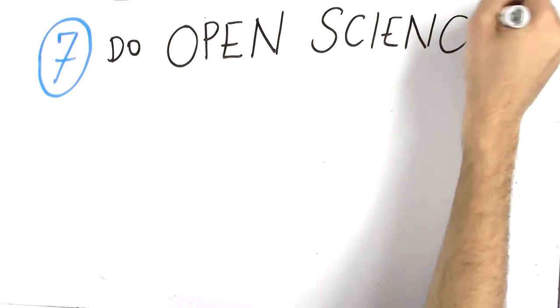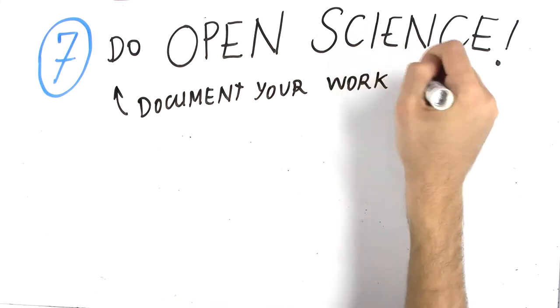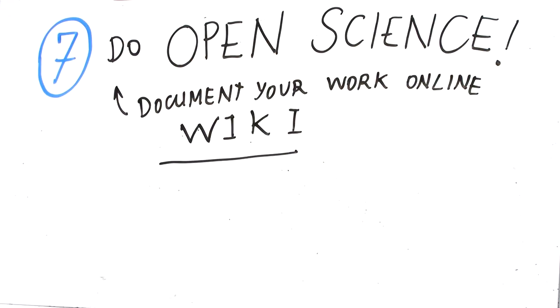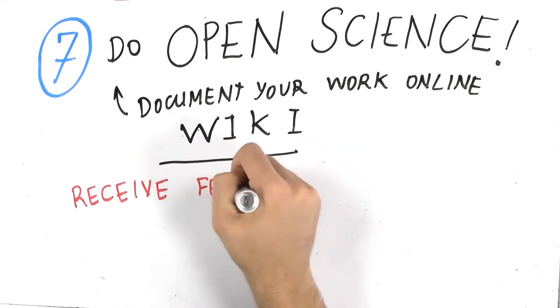Seven, open science is one of the main pillars of iGEM. Document your work online, for example on a wiki, so that people can easily access and follow your project and give you feedback and advice.